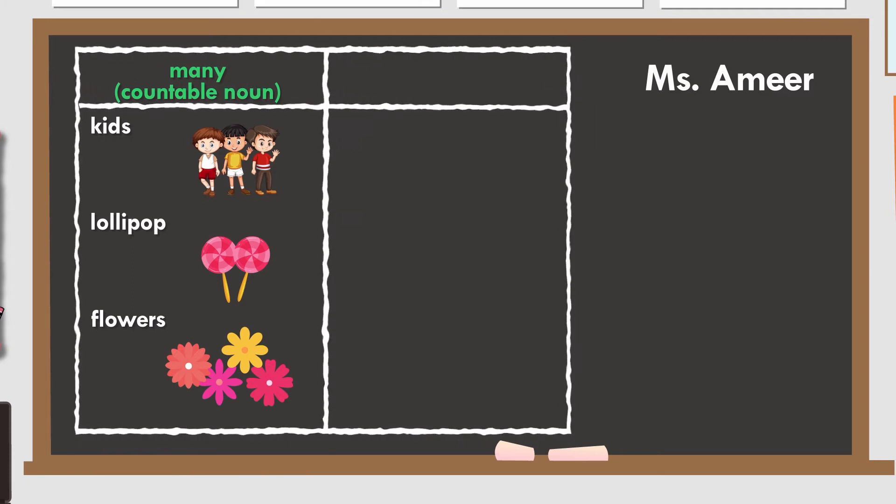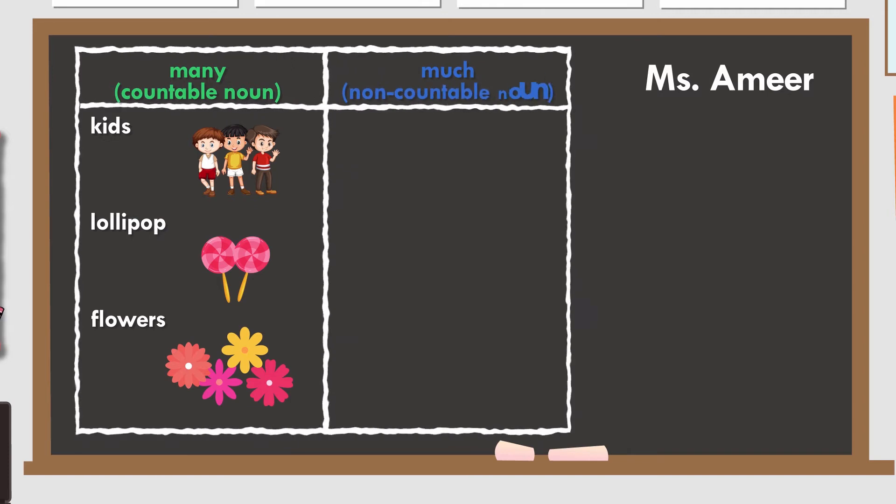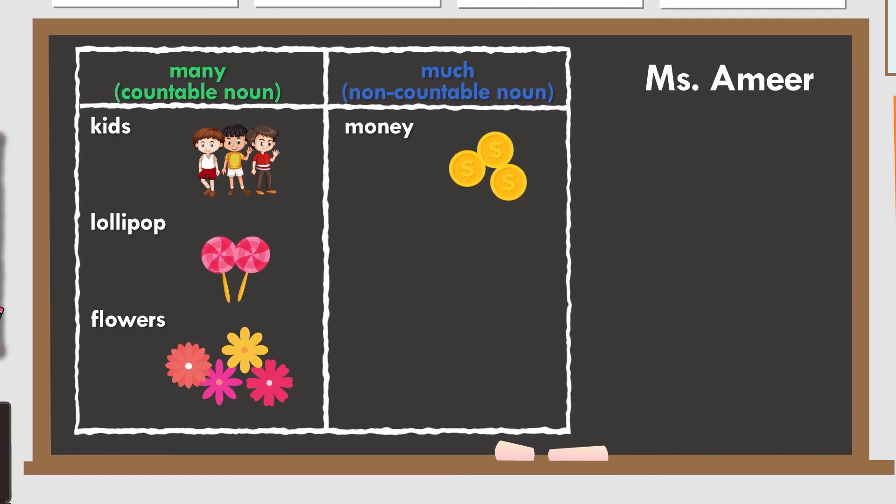Some examples of non-countable nouns are, money. You would say, how much money do you have?